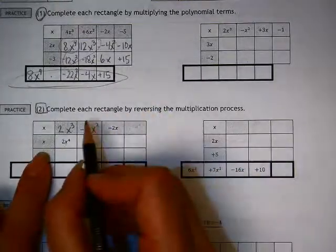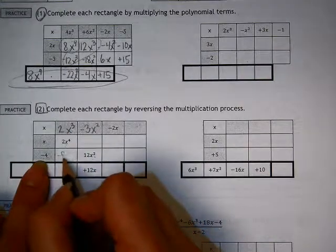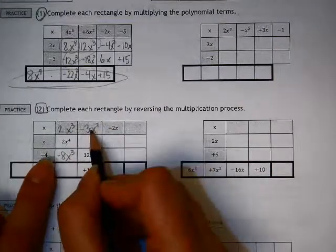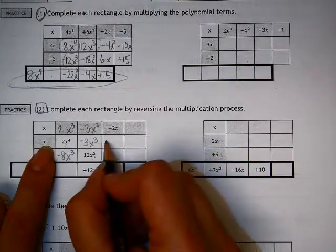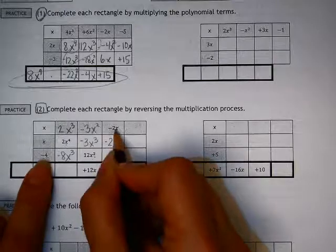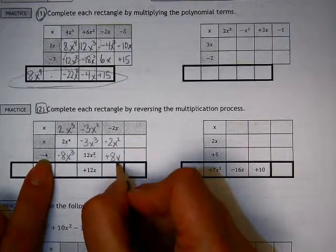And at this point, I think I can just start simplifying what I have. So this here would be this times this is negative 8x cubed. This times this is negative 3x cubed. These two multiplied is negative 2x squared. And these two multiplied gives me a positive 8x.